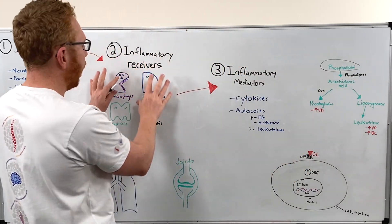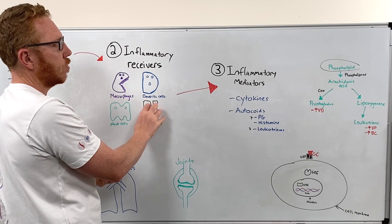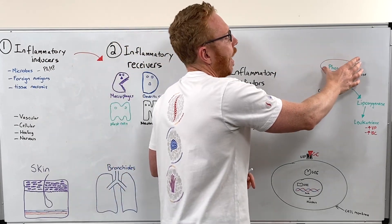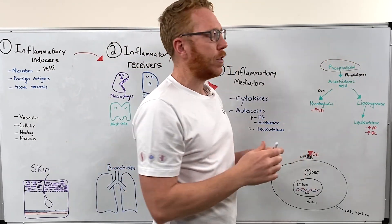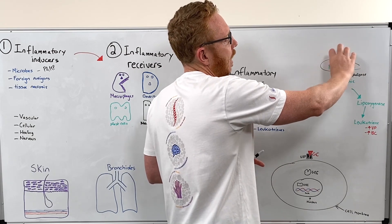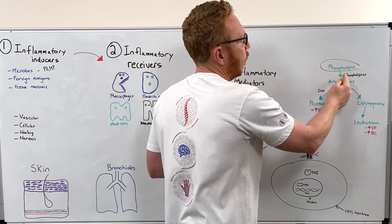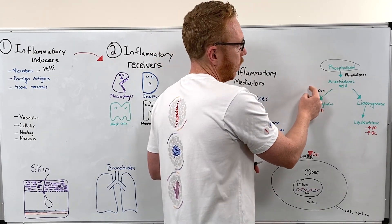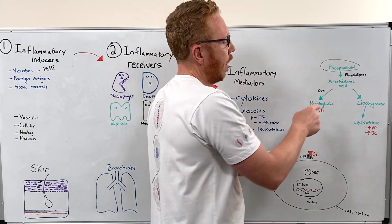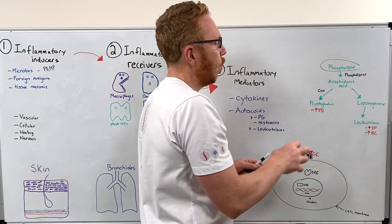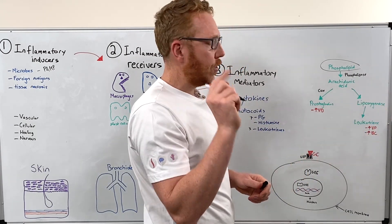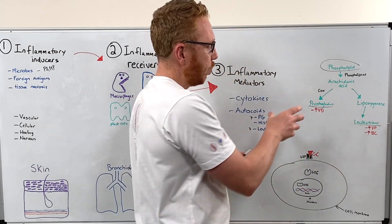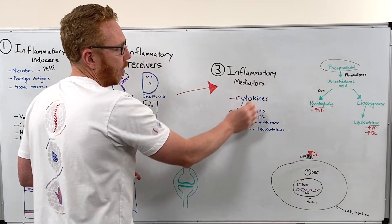With respect to prostaglandins and leukotrienes, how are they made? Imagine the cell being one of these receivers activated by inducers. The starting point is the phospholipid - this is the cell membrane. Once they're turned on through the inducers, through an enzyme called phospholipase, they will start to modify bits of the cell membrane into arachidonic acid. Then other enzymes such as cyclooxygenase (COX-1, COX-2) and lipoxygenase will then make different mediators. The two important ones are prostaglandins and leukotrienes.